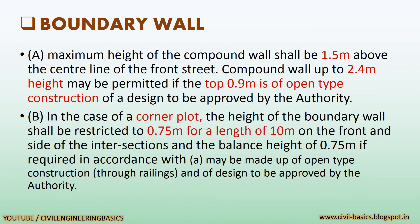We will see the requirements of Boundary Wall. The first requirement is: the maximum height of the compound wall shall be 1.5 meter above the center line of the front street. A compound wall up to 2.4 meter height may be permitted if the top 0.9 meter is of open type construction of a design to be approved by the authority.